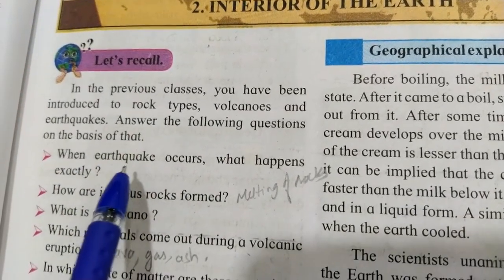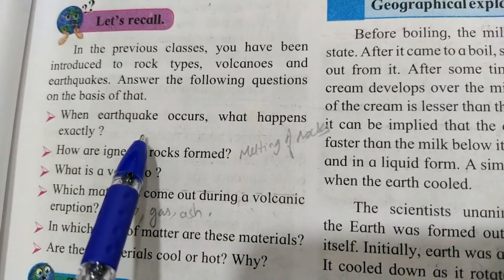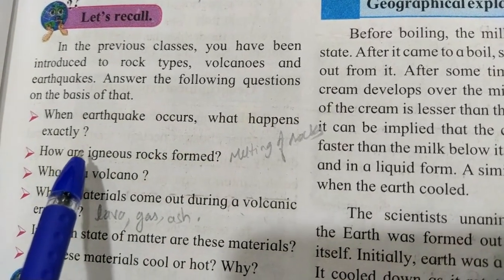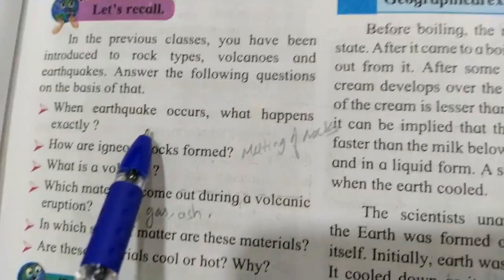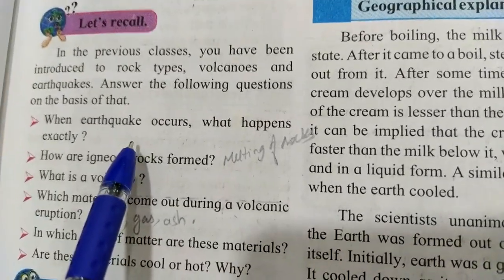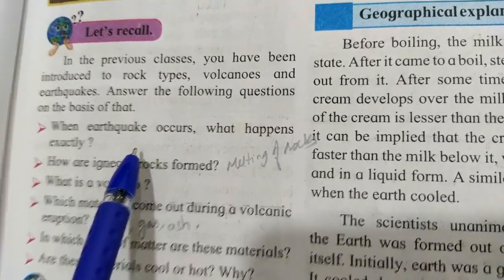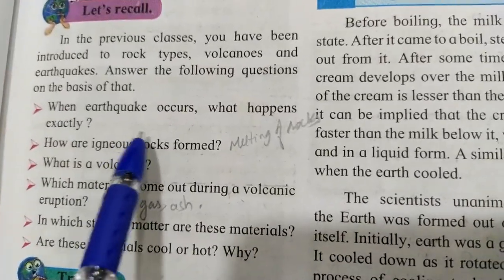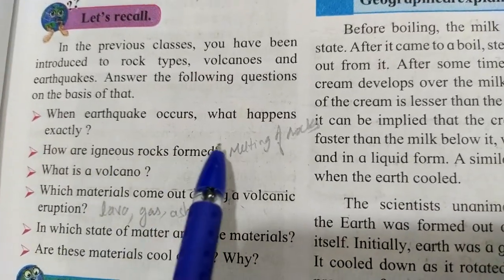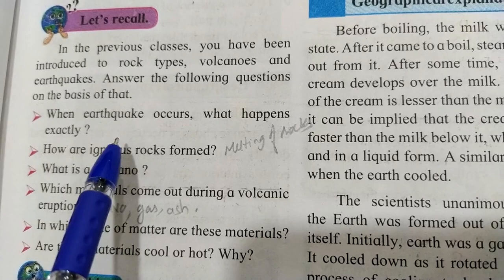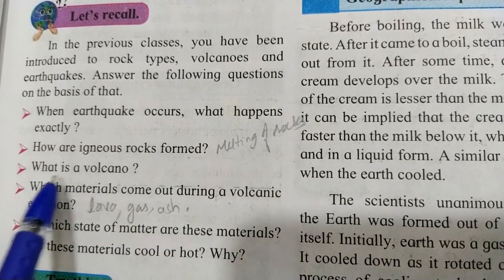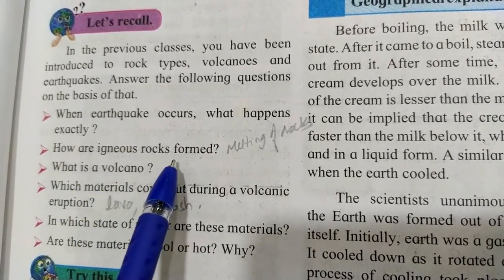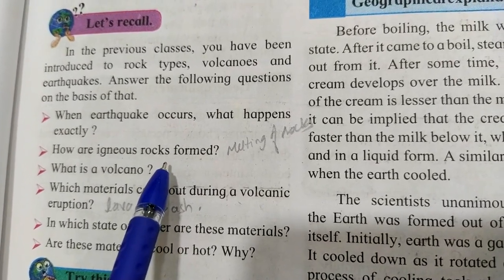When an earthquake occurs, what happens exactly? As you know, when an earthquake comes, huge buildings collapse and water from the sea comes out. Those are some of the consequences or results of an earthquake. Then, how are igneous rocks formed? We have seen in the last chapter the melting process of rocks, and because of that igneous rocks are formed.